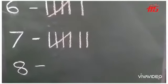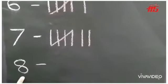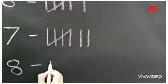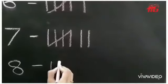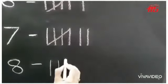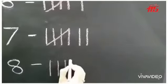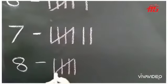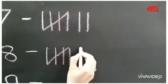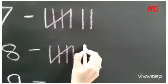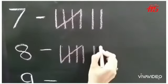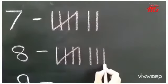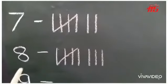Let us do the tally marks for number 8. 1, 2, 3, 4 — number 5 shuts the door. Again we are going to leave a little space. This is showing number 8.